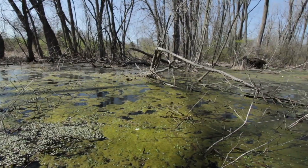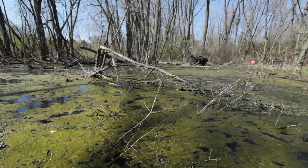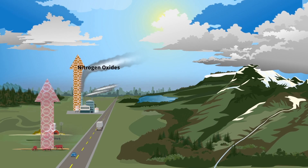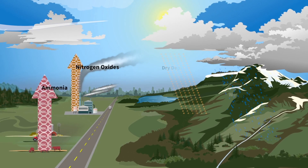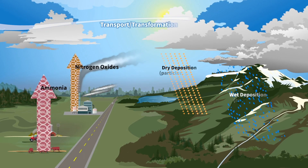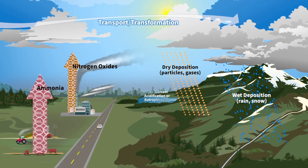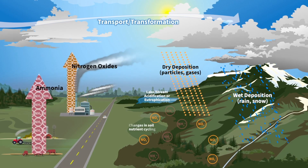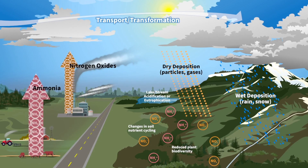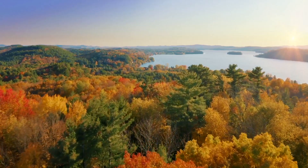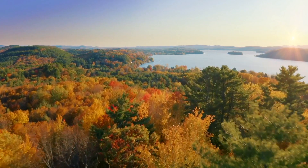One of the most harmful air pollutants is excess nitrogen. When nitrogen is released into the atmosphere from air pollution, some of it is deposited into sensitive watersheds as components of rain, snow, clouds, fog, gases, and fine particles. From there, it makes its way into surface water bodies such as lakes and streams.